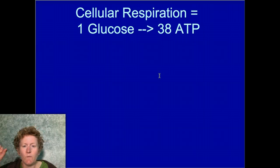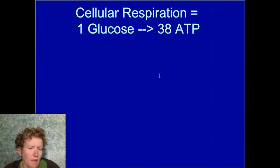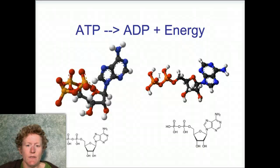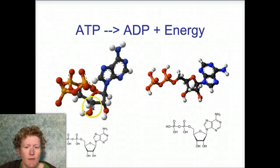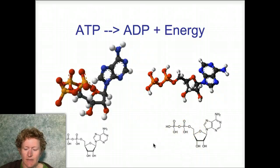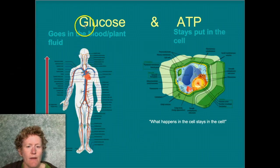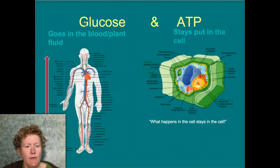Cellular respiration takes one glucose and makes about 38 ATP molecules. It's an important way the body gets energy out of glucose. Glucose travels in the blood; ATP is what gets used in the cells. When you want energy from ATP, you clip off a phosphate group, converting it to ADP, and in that process you release a great deal of energy.